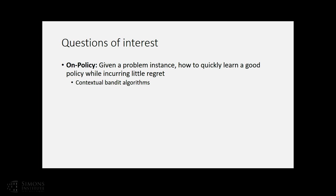This allows us to concretely define two types of questions. In reinforcement learning, there's the on-policy question: given a problem instance and the option of acting in the world, how do you quickly learn a good policy while incurring small regret? This is where most contextual algorithms focus - doing adaptive explore-exploit to quickly learn a good policy.